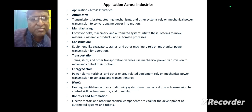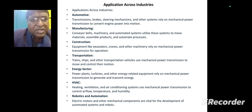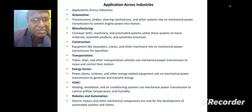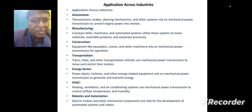For automotive systems, transmission, brakes, steering mechanisms and other systems rely on mechanical power transmission for operation. For transportation, it is used to convert engine power to motion. For manufacturing, it is used in conveyor belts, machinery, and automation systems to move materials, assemble products, and automate processes.